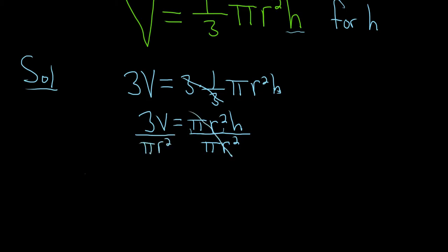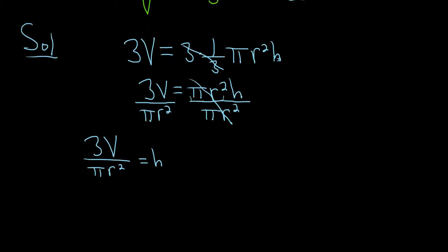So this goes away. We have 3V/πr², and that's equal to h. And that's it. Now if you want to make it look better, you can put the h on the left-hand side like this. So h = 3V/πr². And that would be the final answer.